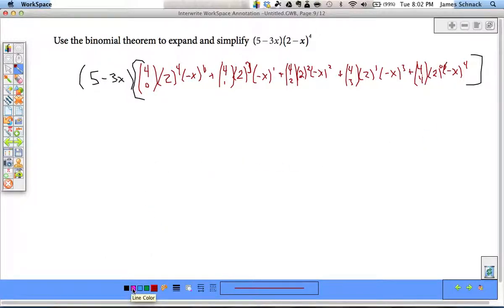So there we go. Now we've just got to clean up what's in there. 4 choose 0 is 1 times 16 times 1 plus 4 times 8 times negative x plus 6 times 4 times positive x squared.